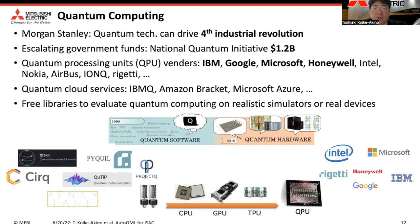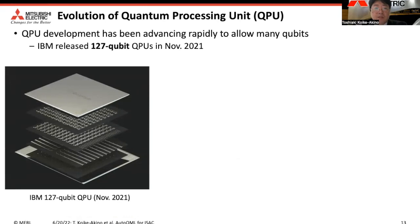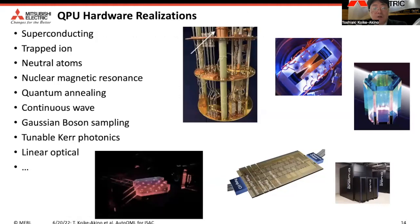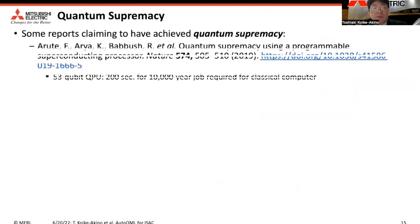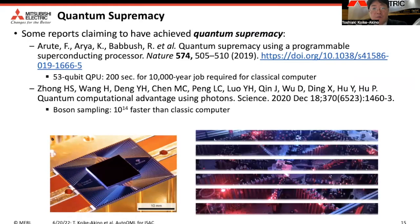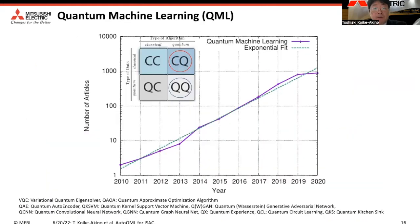Free libraries are also maturing. In particular, QPU development has been advancing very rapidly. Last November, IBM released QPUs with more than 100 qubits, and they plan to release more than 1000-qubit QPUs next year. There are many different hardware realizations besides superconducting QPUs, like trapped ion, neutral atoms, and photonic processors. Quantum supremacy has been demonstrated, though quantum advantage is still debated for general applications. In the past decade, quantum computing has been applied to machine learning.